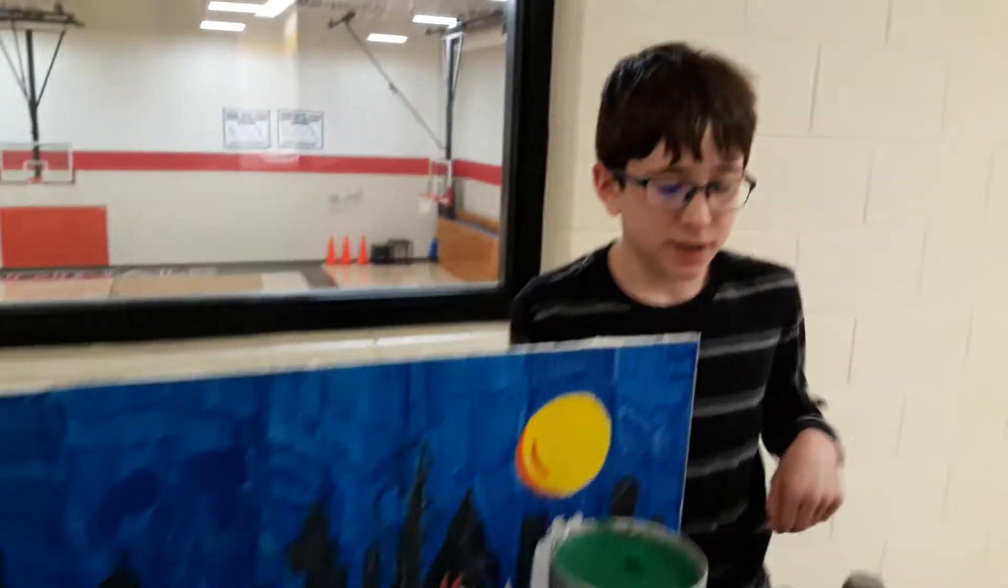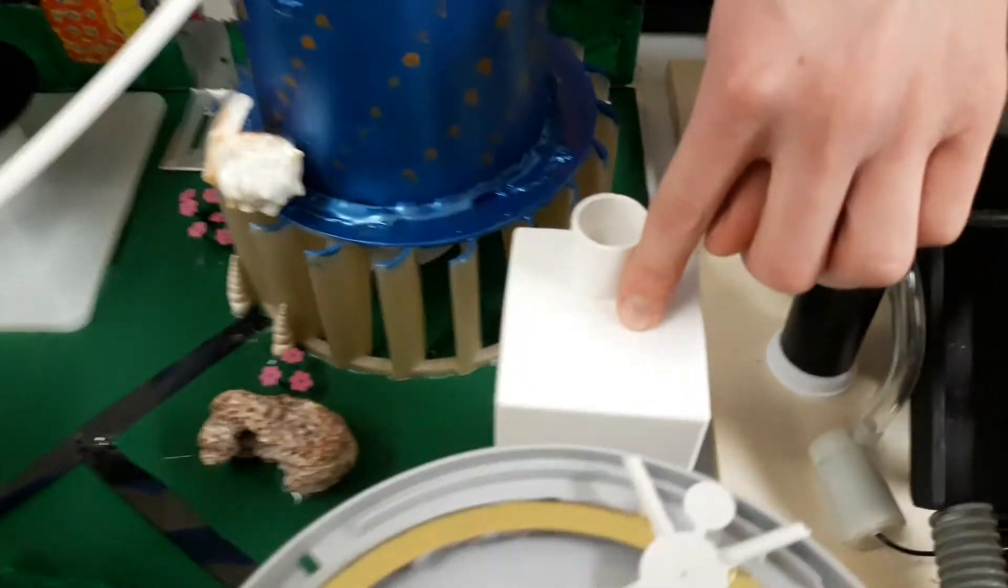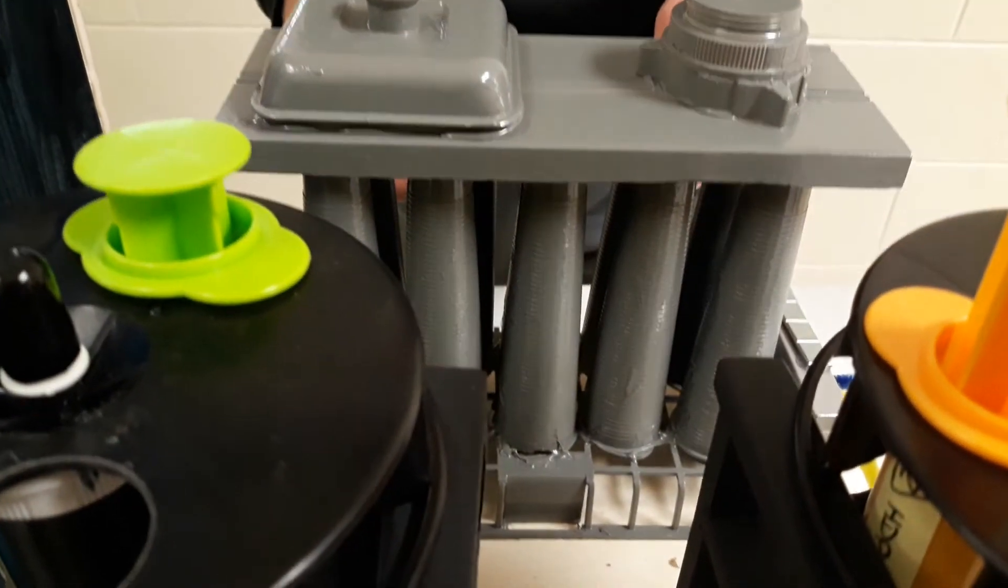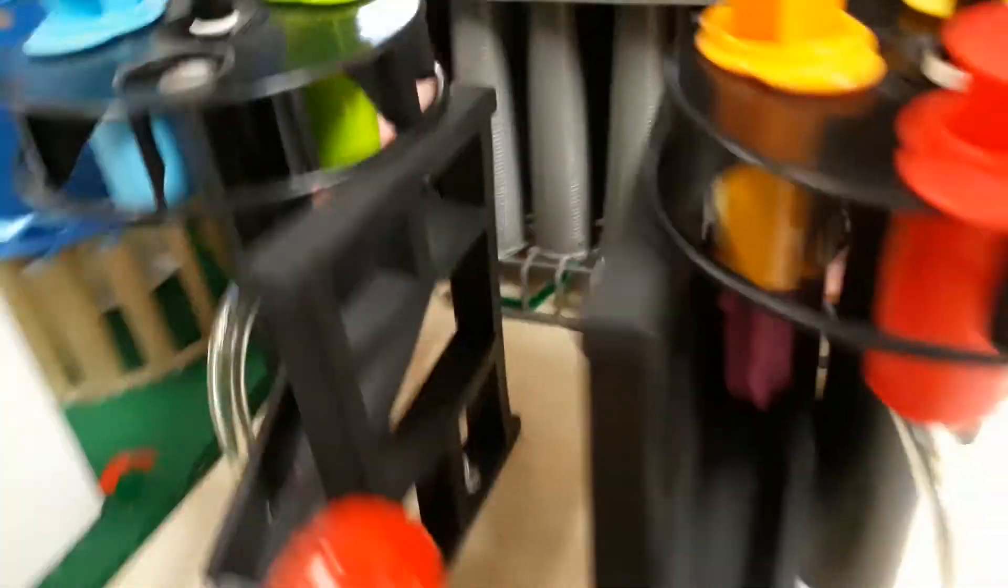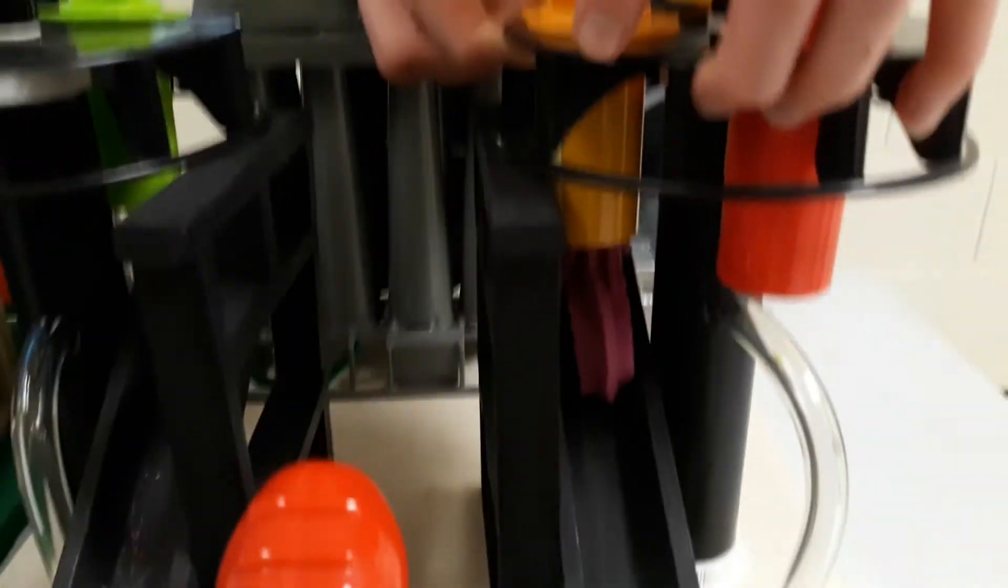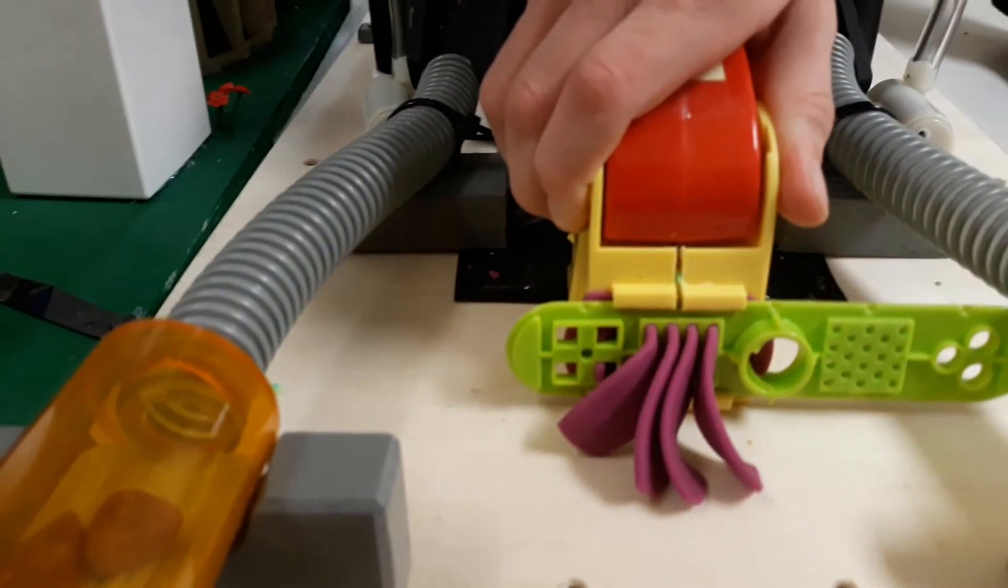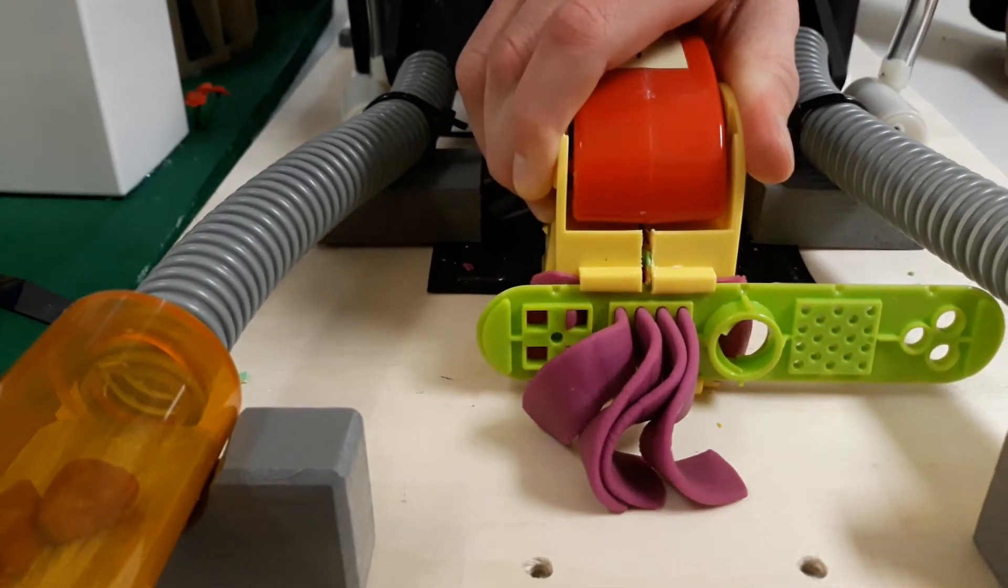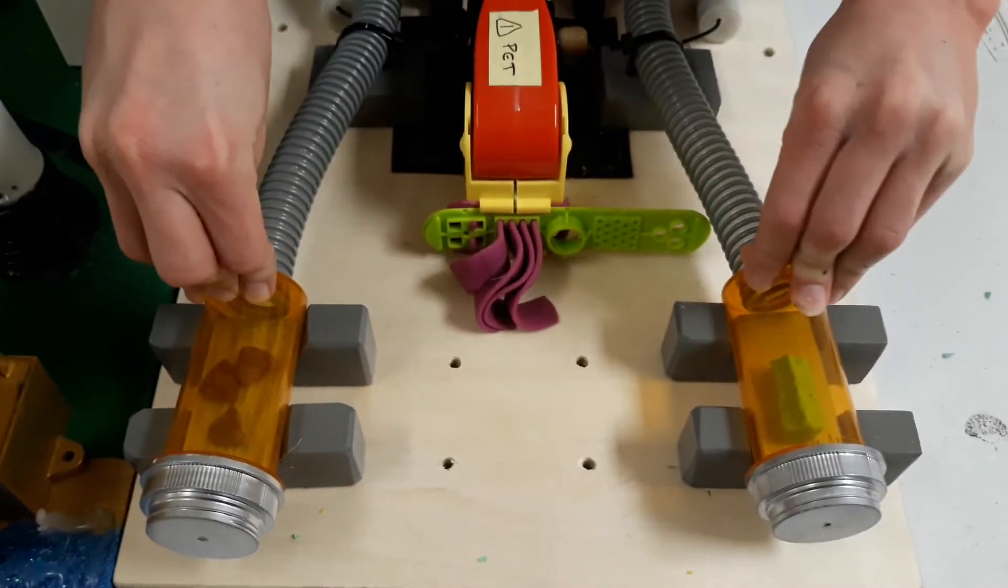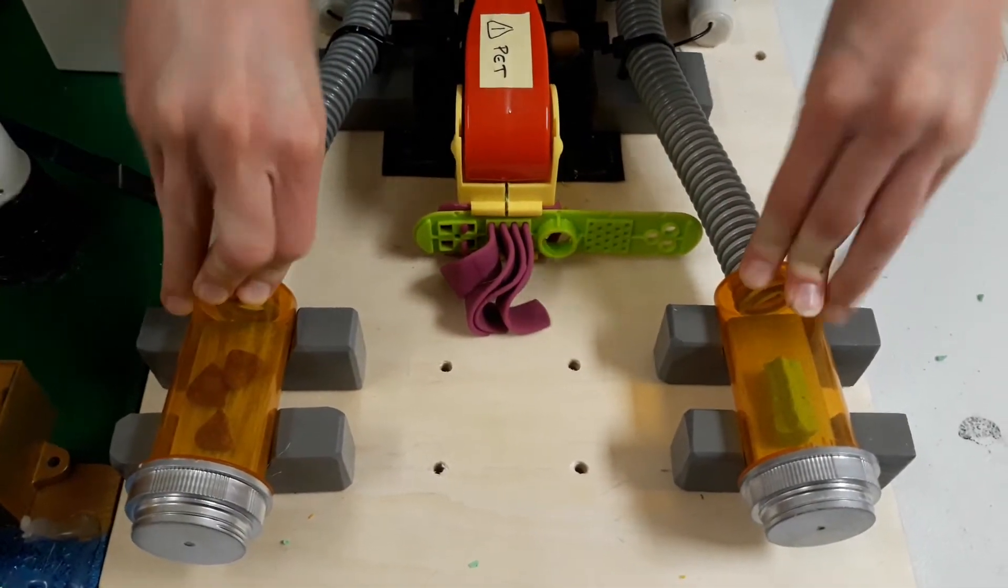And as for the plastics, those come here to be shredded up into small bits. And then from there, they come to our silos to be mixed with other materials to strengthen them. And then they travel through these tubes and then are heated and extruded out. And then after that, they travel through the pneumatic tubes and into the solidification chambers where they are cooled and stored.